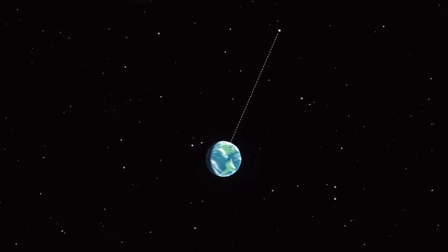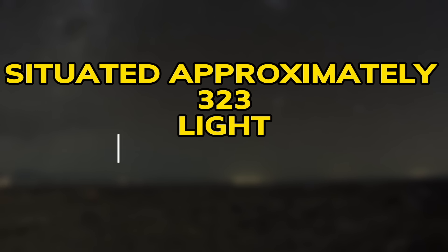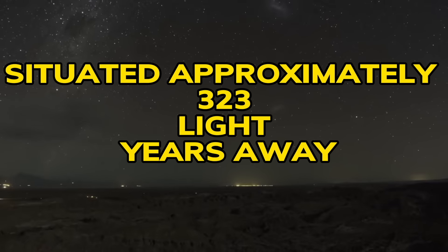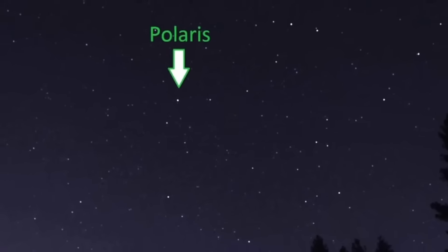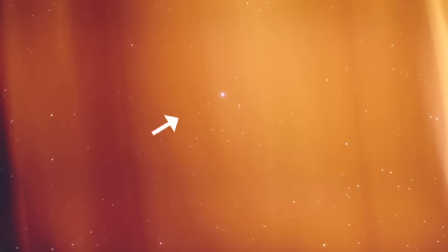One important aspect to consider is the distance between Polaris and Earth. Situated approximately 323 light-years away, the light from Polaris takes about 323 years to reach us. This means that the light we currently see from Polaris is as it was 323 years ago. If Polaris were to explode today, we wouldn't know about it until 323 years from now. This temporal delay adds an intriguing element of time to our understanding of the star's potential fate.